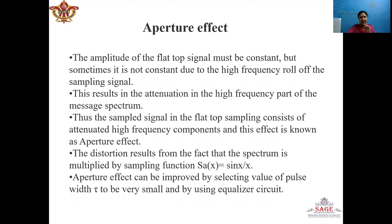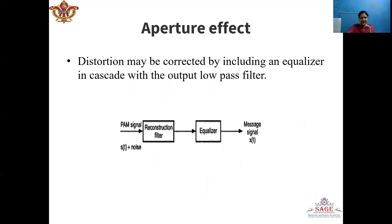The aperture effect can be improved by selecting a very small pulse width tau, or by using an equalizer circuit. The equalizer circuit is a passive circuit whose transfer function is the inverse of the sinc function sin(X)/X. The flat top sample signal is passed through a reconstruction low-pass filter, and its output is then fed to the equalizer circuit, which eliminates the aperture effect and recovers the original message signal.